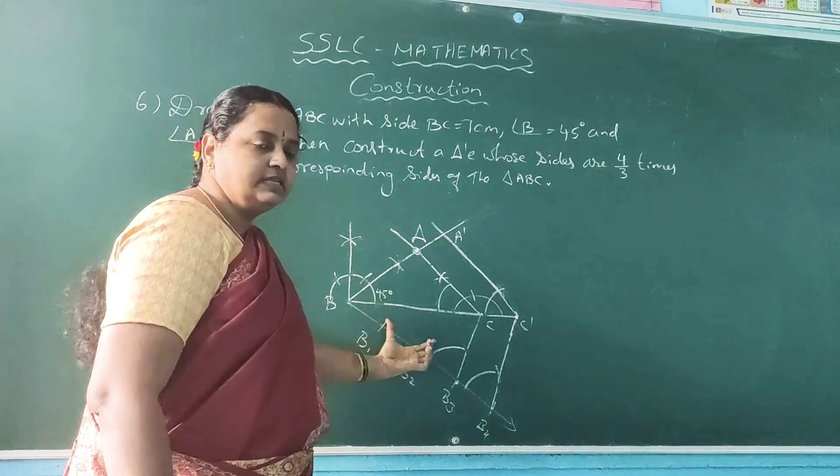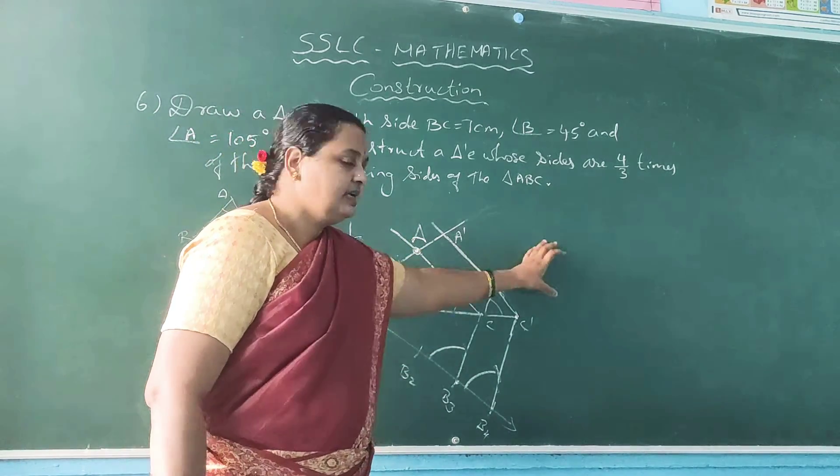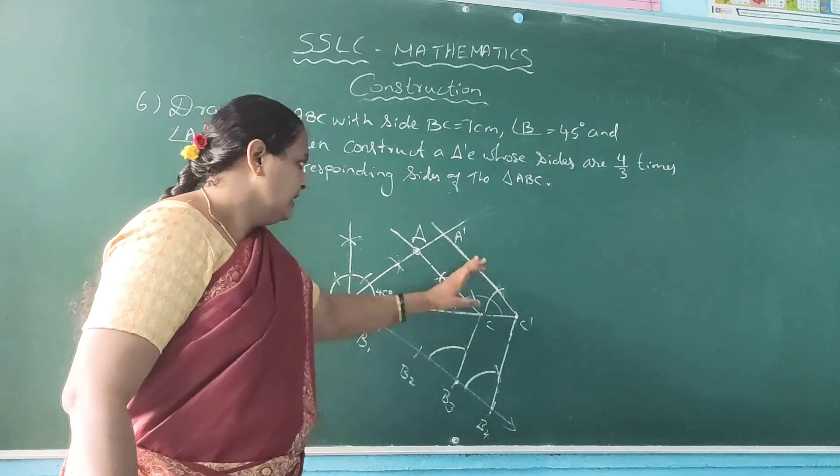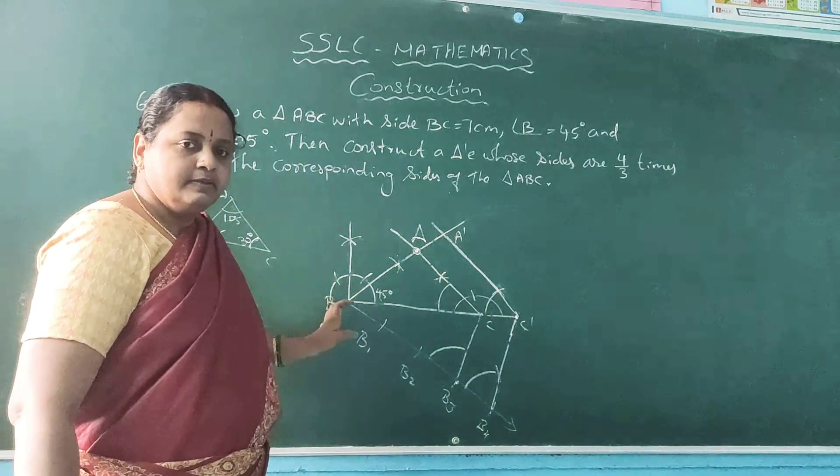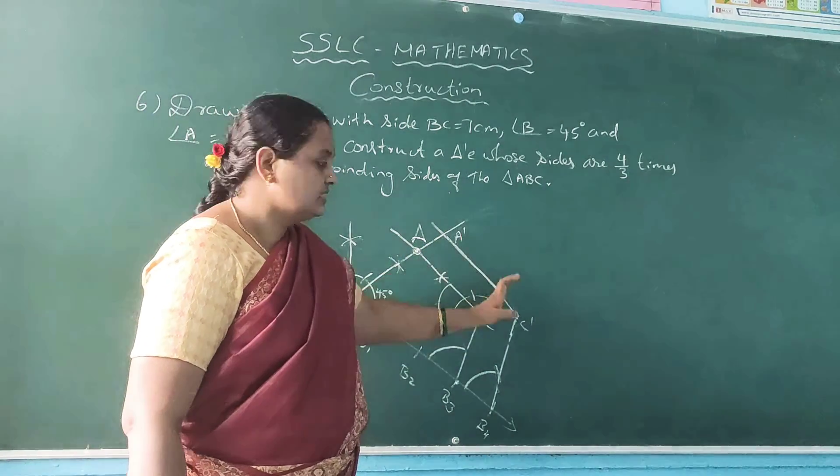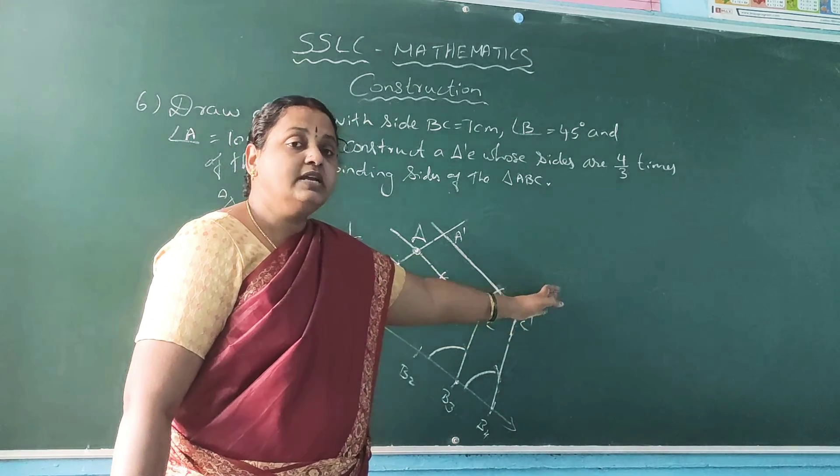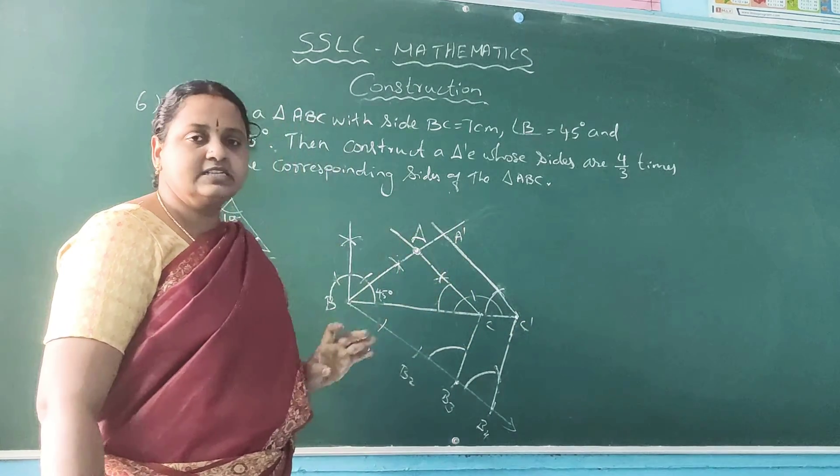Measure the measurement: AB measurement, BC measurement, and AC measurement. Same way for the bigger triangle, A dash B, B C dash and A dash C dash, you should measure and write the value. So that you will get 3 marks for this construction. Is it clear children?